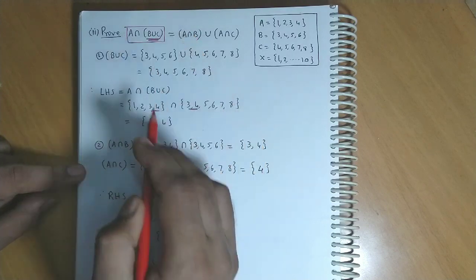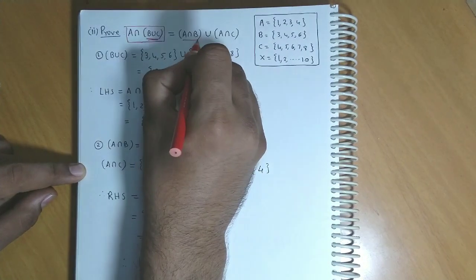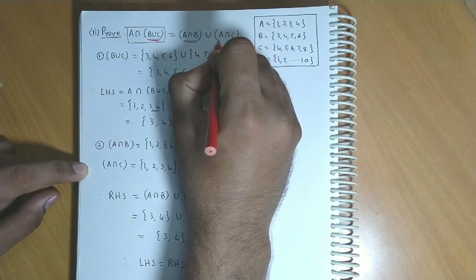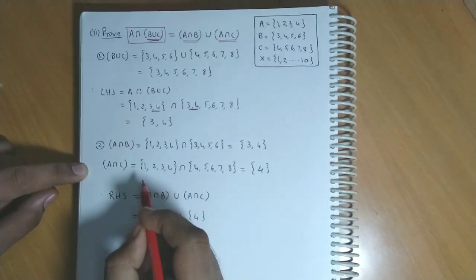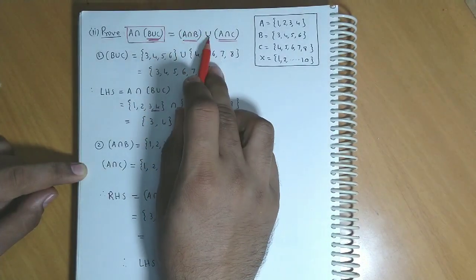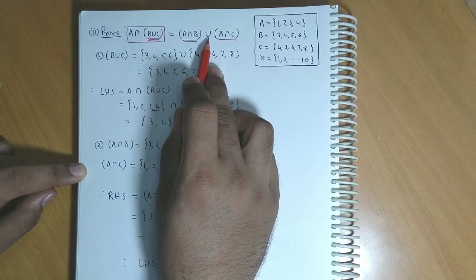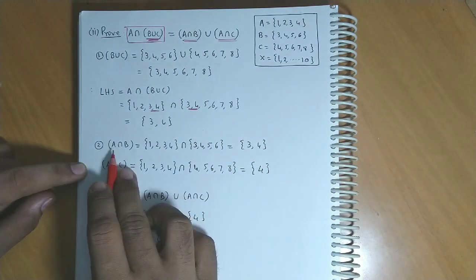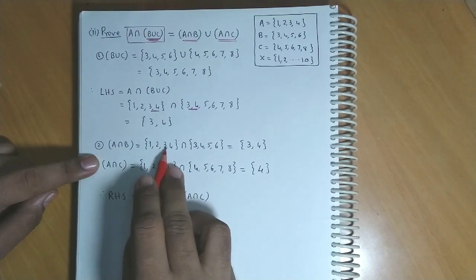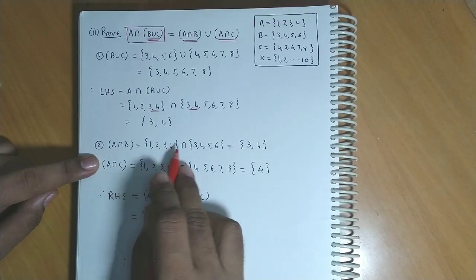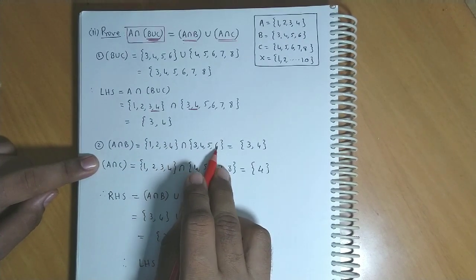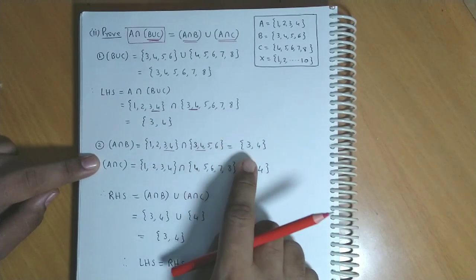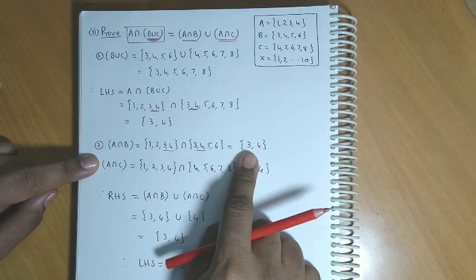Now for the right hand side, pahle hameh A and B ka intersection lena hai. Phir A and C ka intersection. Aur phir in doonoh ka hameh union kar lenge. Toh pahle A and B ka intersection karte hai. Set A hai {1, 2, 3, 4}, B hai {3, 4, 5, 6}. So common elements hai 3 and 4. So A intersection B = {3, 4}.